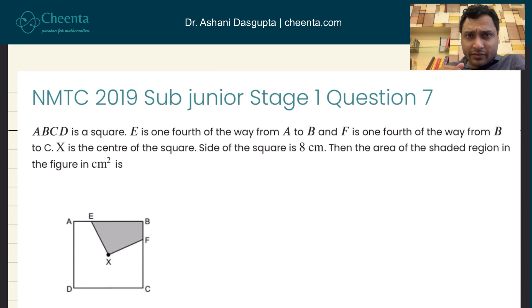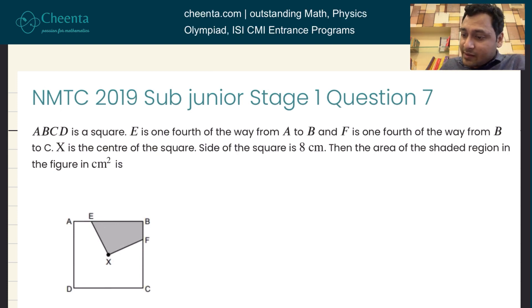Let me tell you what the problem is. There is a square ABCD whose side lengths are given to be 8 centimeters. So for example, AB is 8 centimeters, BC is 8 centimeters, and so on.